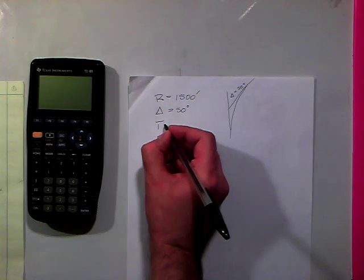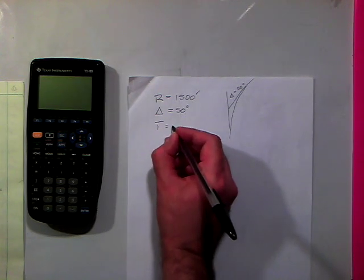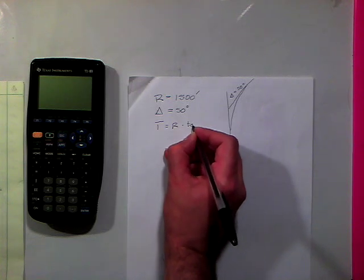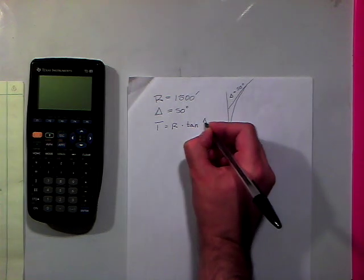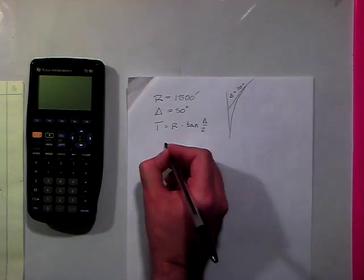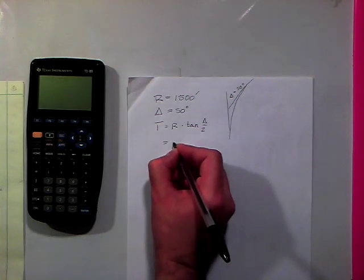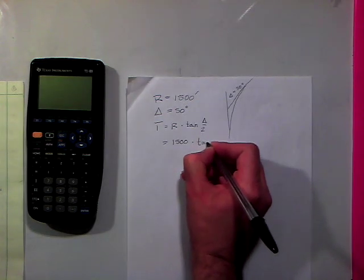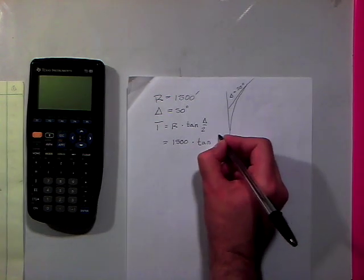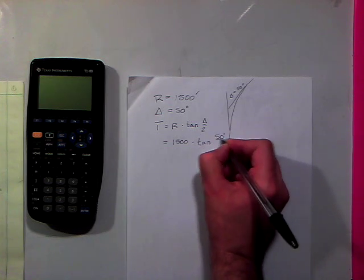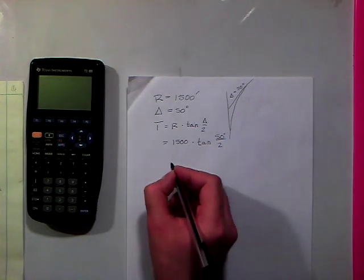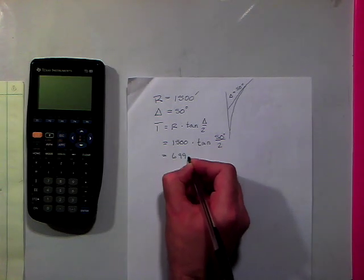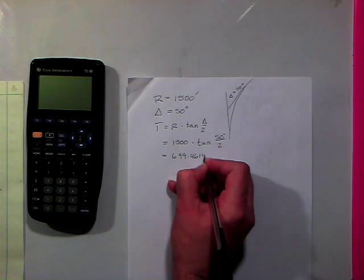Our tangent, we can go ahead and use the tangent equation, which is tangent equals radius times the tangent of delta over two. So this will equal 1500 times tangent of the delta of 50 degrees, divide that by two. This will equal 699.4614 feet.